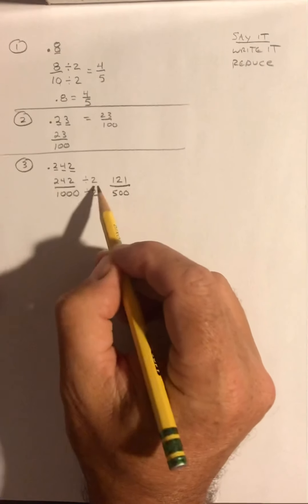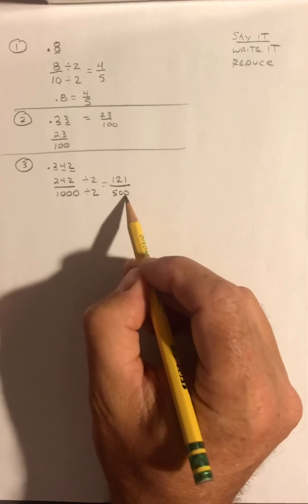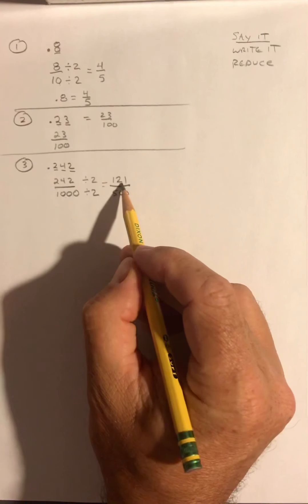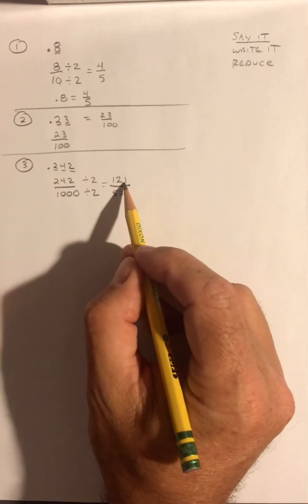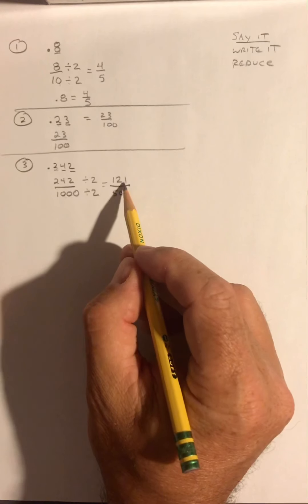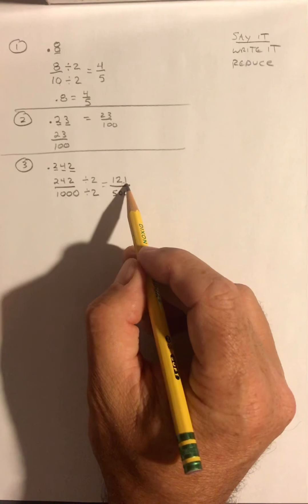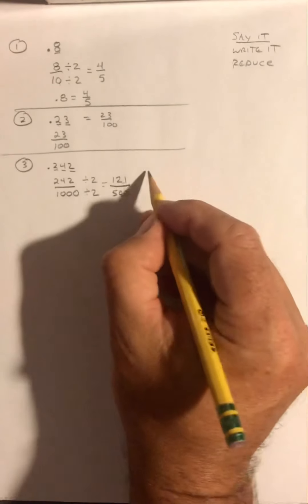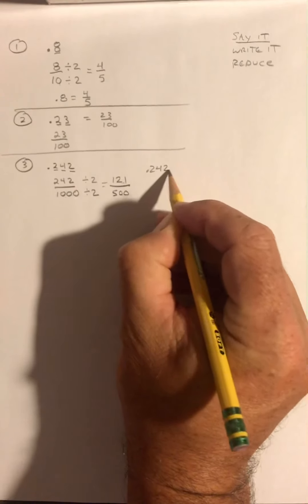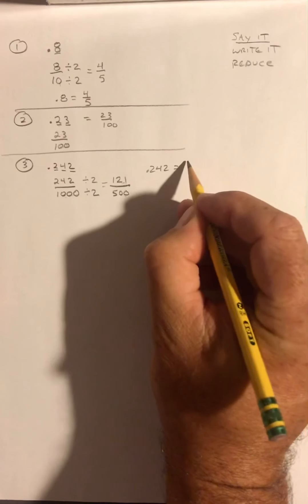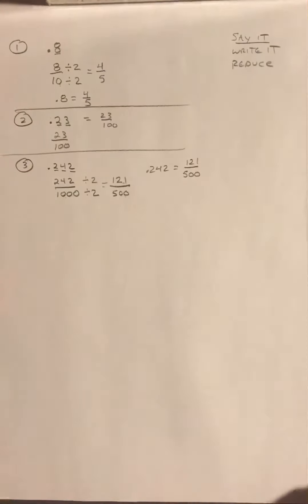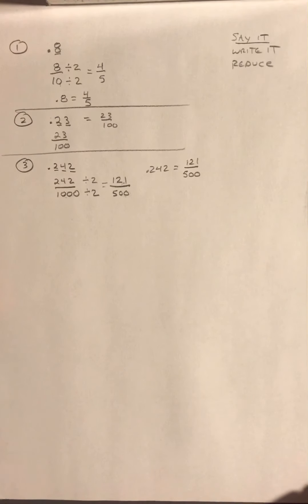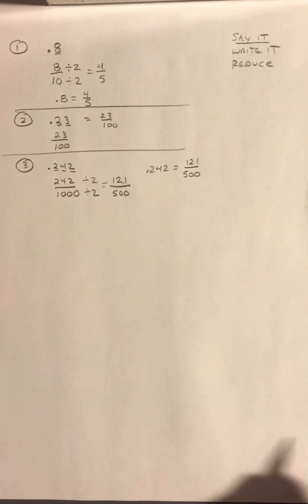Now if I can take one 2 out, this is still made up of 2s and 5s, and 121 is not even, so 2 can't go into it. And it doesn't end in a 0 or a 5, so it's not divisible by 5. So 0.242 equals 121 over 500, and that is fully reduced. You know it's fully reduced when there is no factor that goes into the top and bottom.